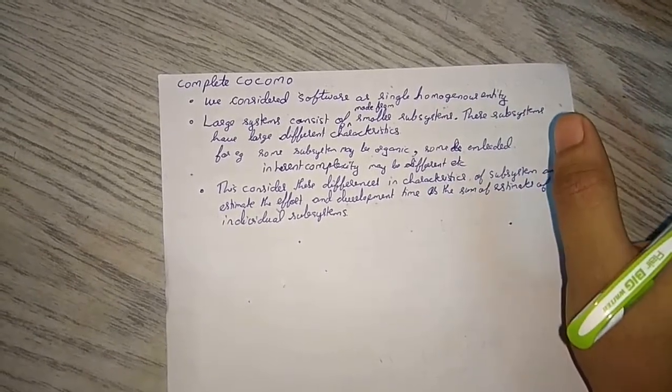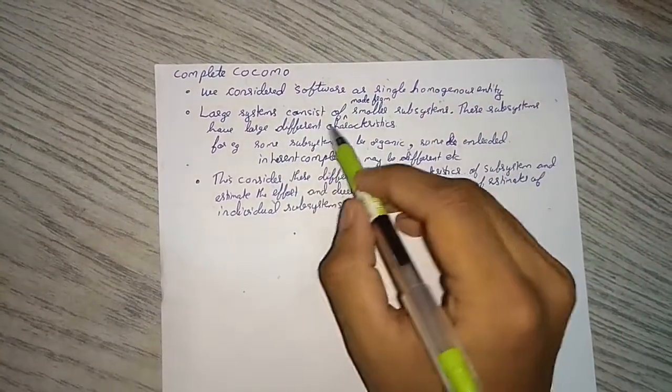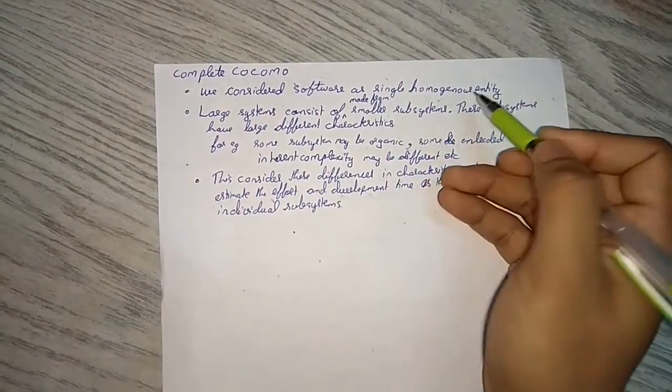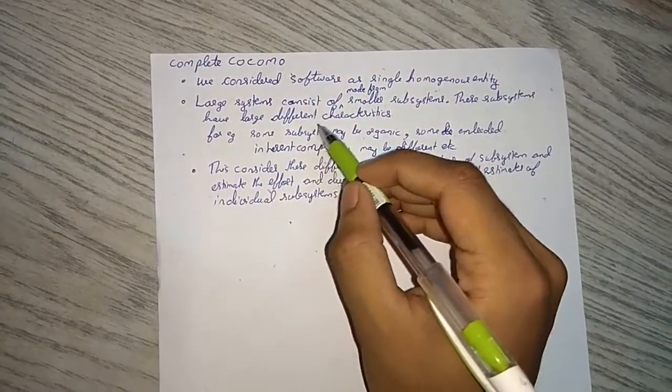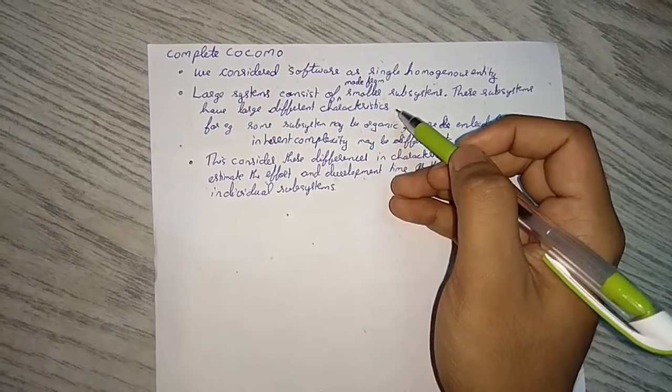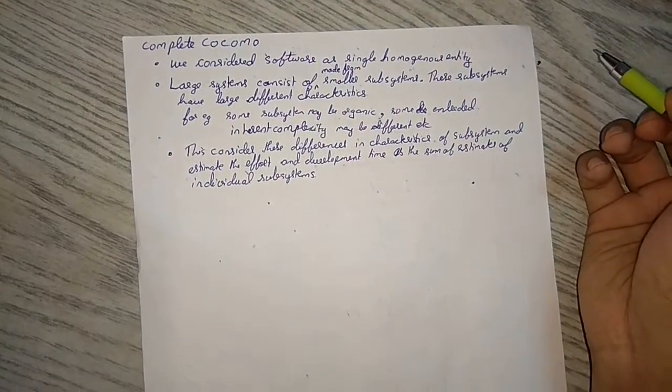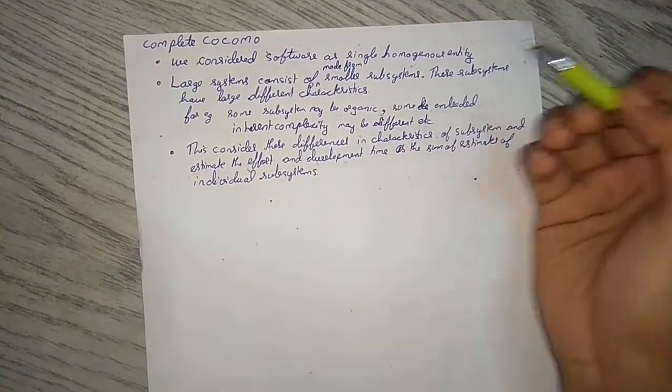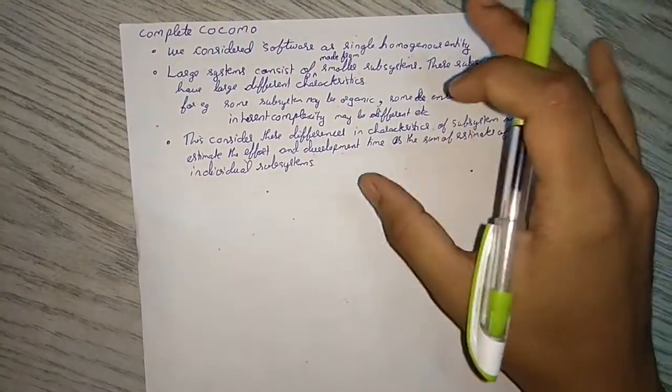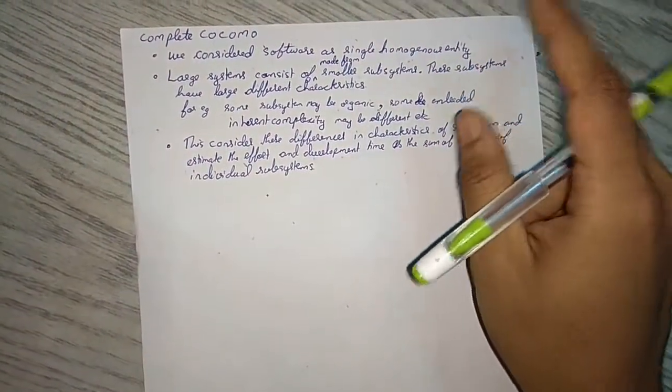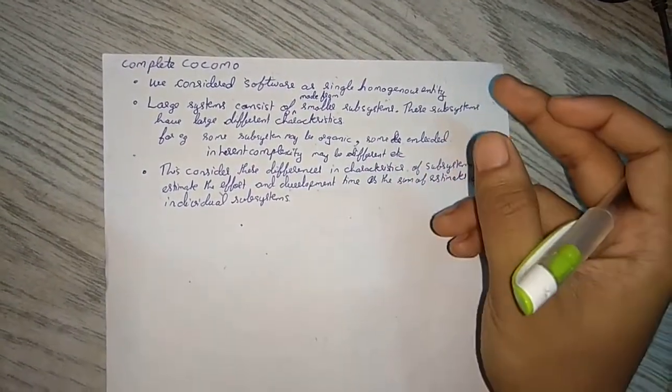But if we go like that, we will get a wrong answer for the effort and development time. So in large systems, we make small subsystems. These subsystems have large different characteristics. Each person has different characteristics. Someone may be experienced, someone is not experienced. We find out the difference in experience.